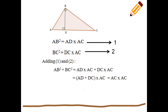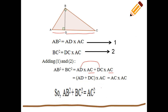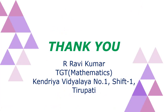Adding equations one and two: AB² + BC² = AD × AC + DC × AC. On the right-hand side, AC is a common factor, so we write AC(AD + DC). Now AD + DC equals AC, so this becomes AC × AC = AC². Therefore AB² + BC² = AC², and the theorem is proved logically.